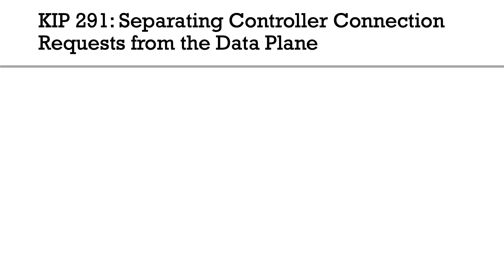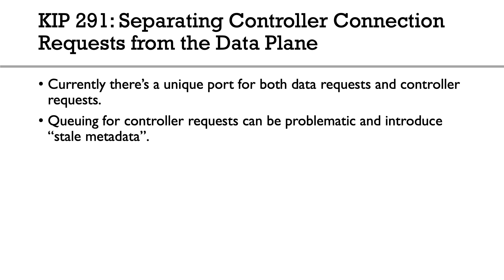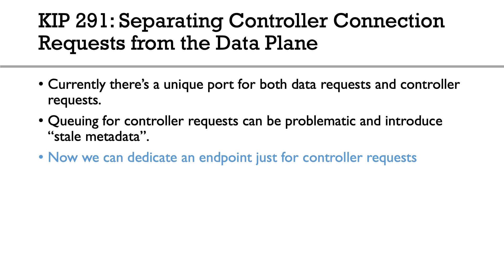Number one is one of the most exciting changes: the separation of the controller connection request from the data plane. This is an optional change, but it brings a lot of performance improvements and stability. Right now there's a unique port for both data requests and controller requests, which means that controller requests can be problematic because they can be queued with data requests, take a long time, and introduce stale metadata. Now we have a dedicated endpoint just for controller requests, giving them higher priority and solving the stale metadata problem.